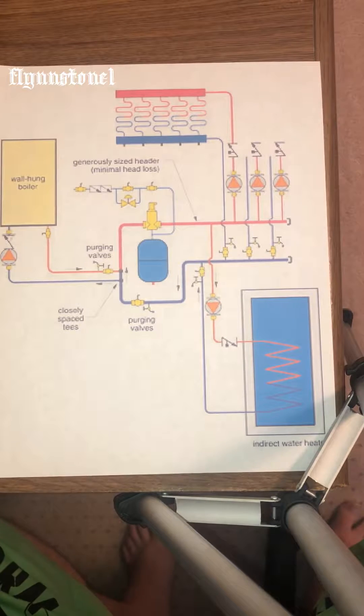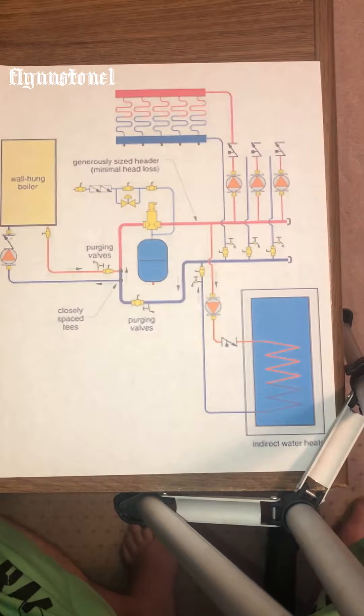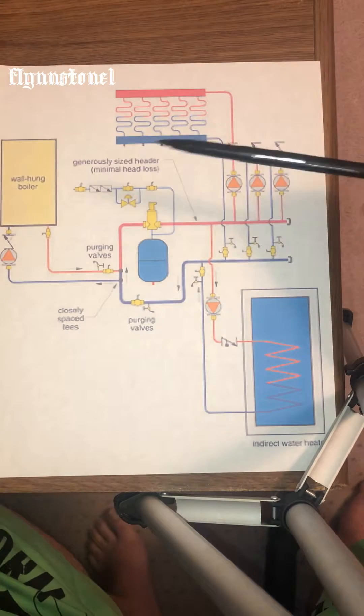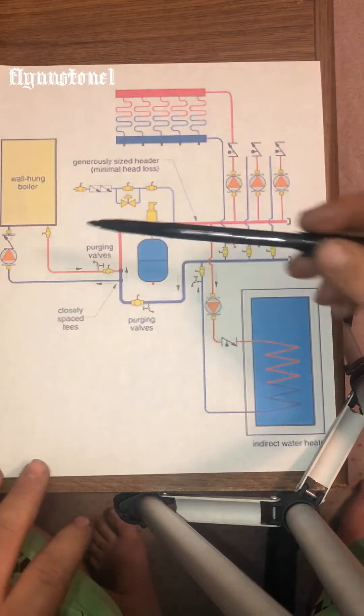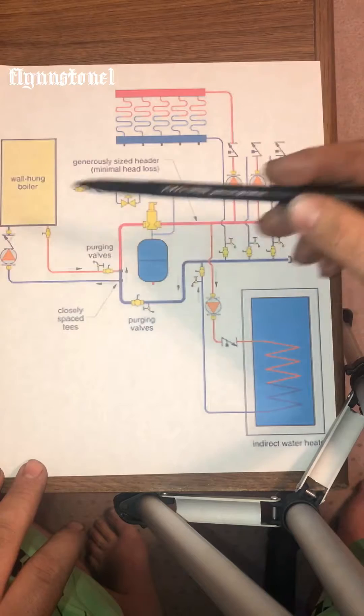This is taken directly from John Siegenthaler Modern Hydronic Heating. So you have your wall hung boiler, your supply and return. This is your boiler circuit.